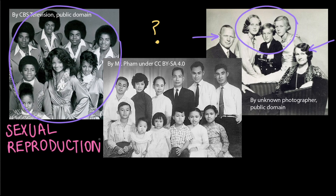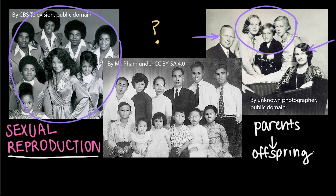Let's start from the beginning. All life comes from other life through the process of reproduction. Parents reproduce to form offspring, and during this process, they pass on their genetic information to their offspring. During sexual reproduction, two parents produce offspring, so each offspring gets a mixture of genetic information from two parents.